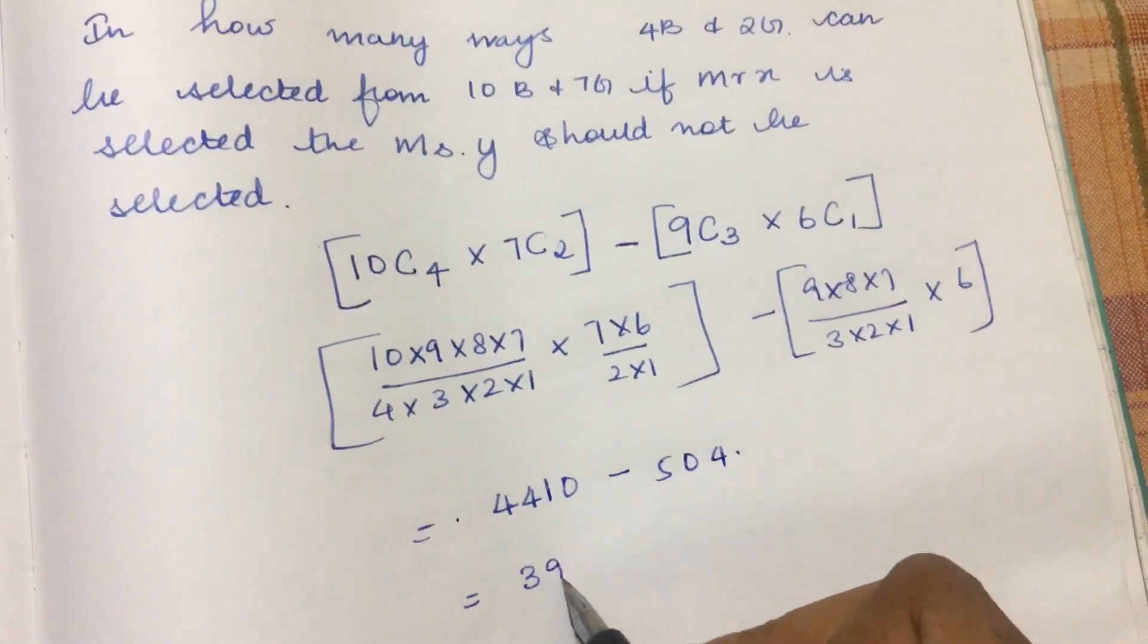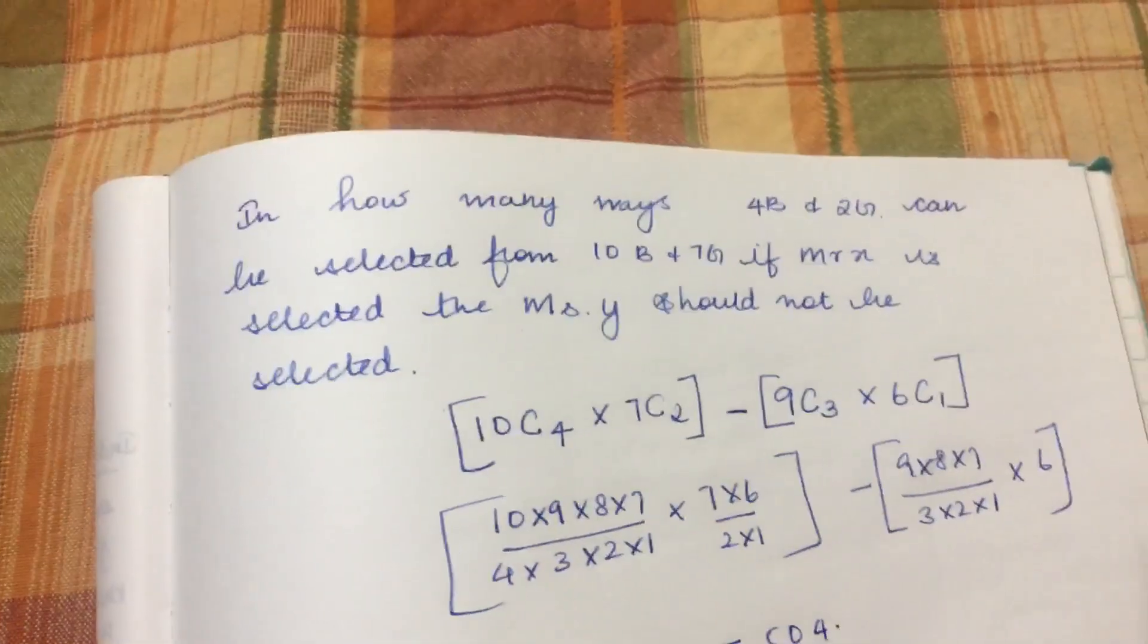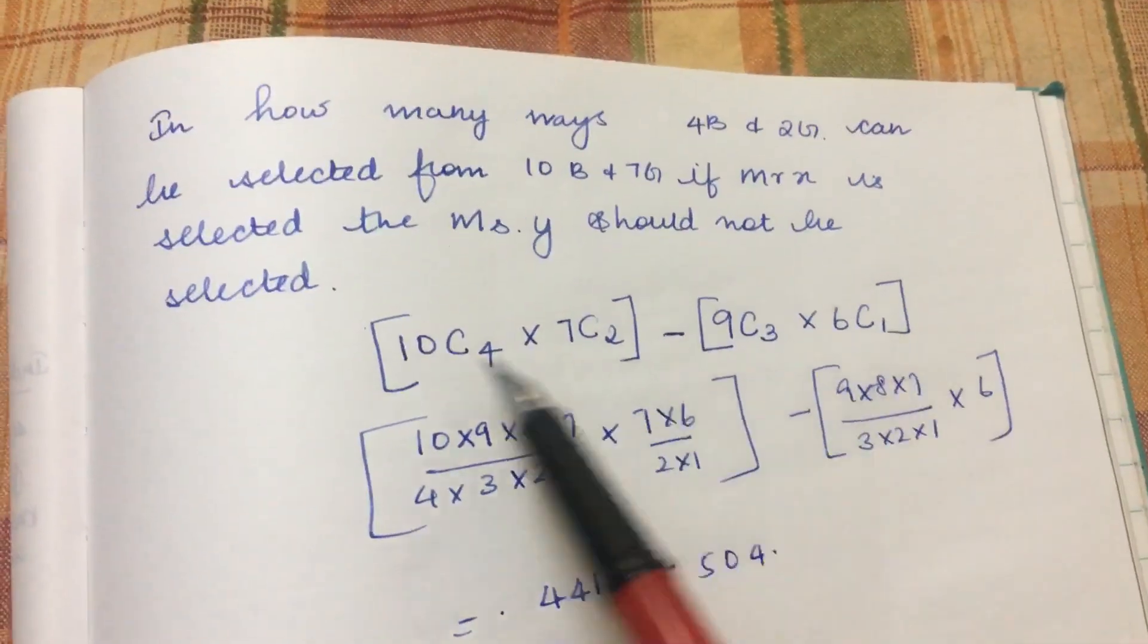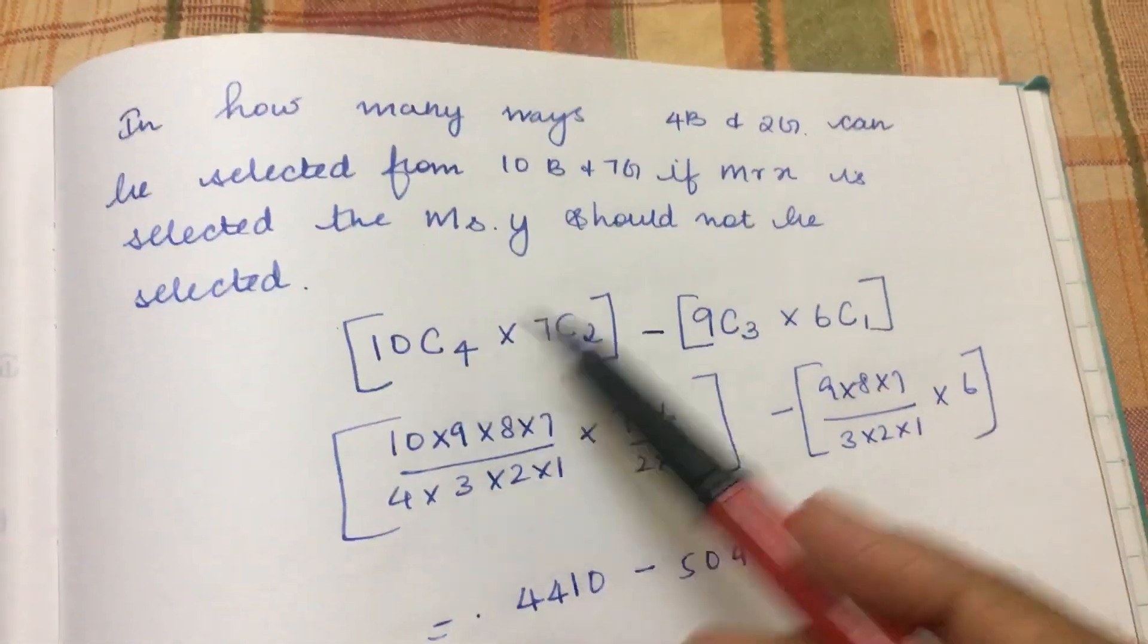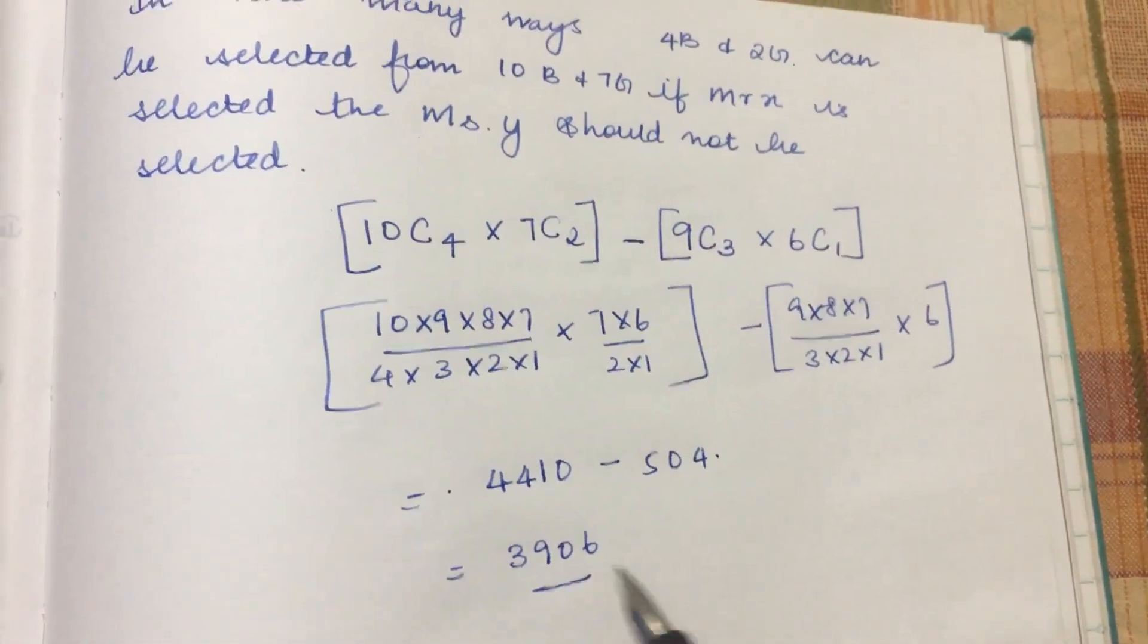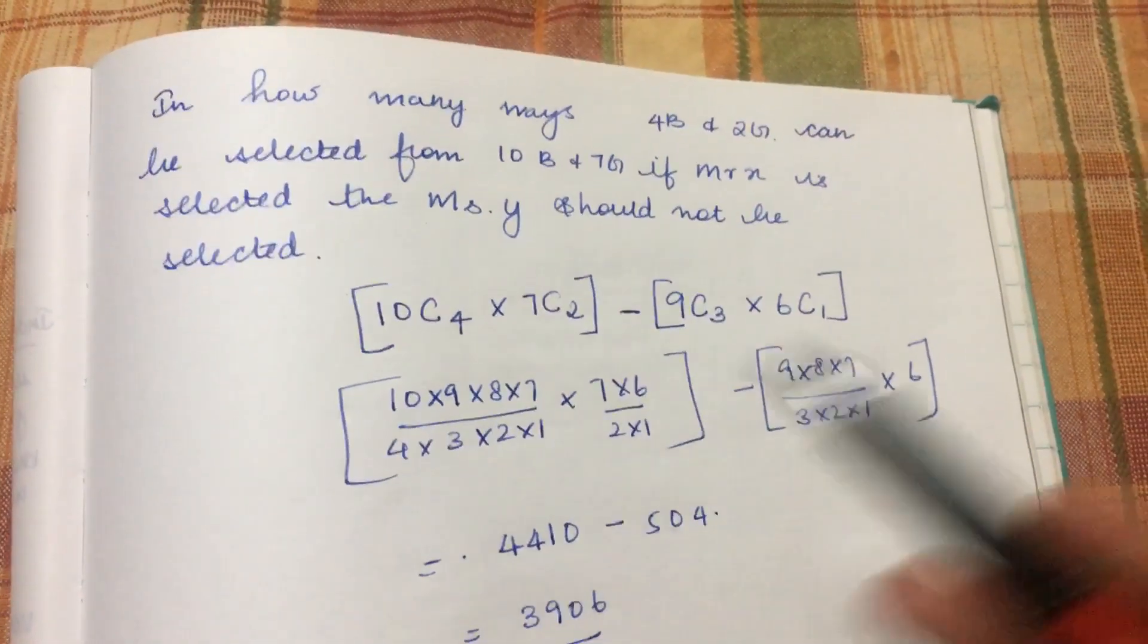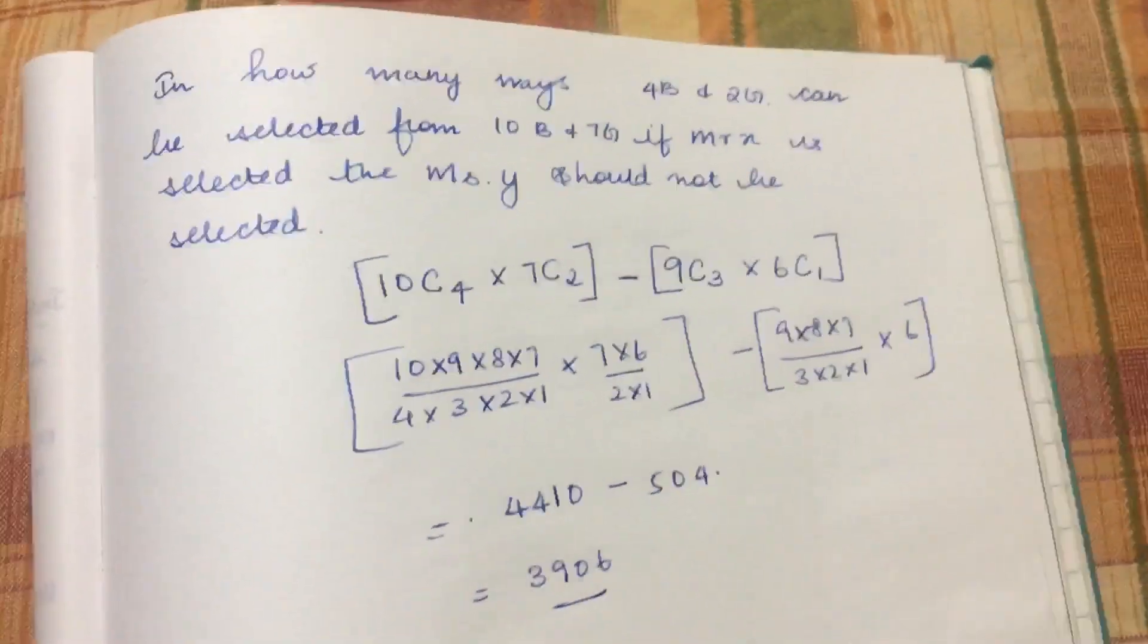3906. So when there's a restriction condition like this, remember to subtract from the total. The answer is 3906 ways to select. OK friends, thank you.